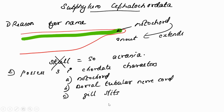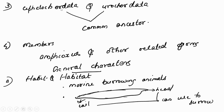Cephalochordata possesses all three primary chordate characters: dorsal tubular nerve cord, notochord, and gill slits — features we already learned in the first class. Cephalochordata and Urochordata, these two sub-phyla, emerged from a common ancestor.